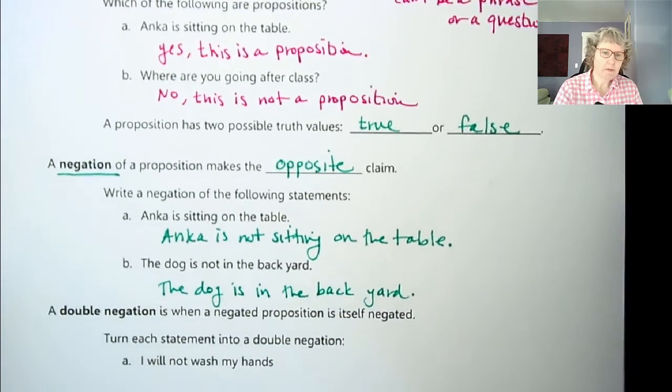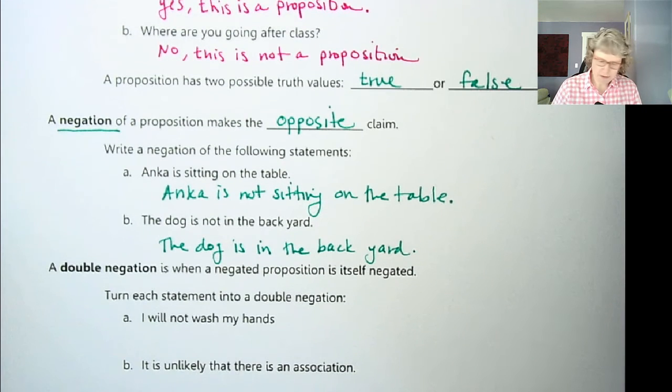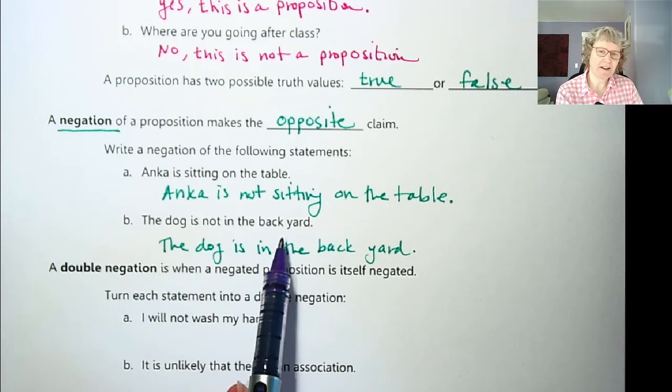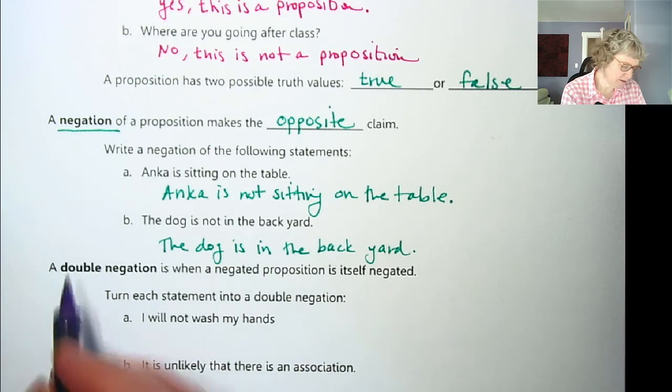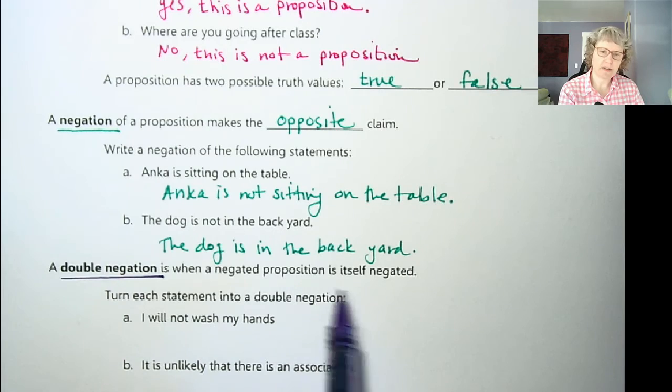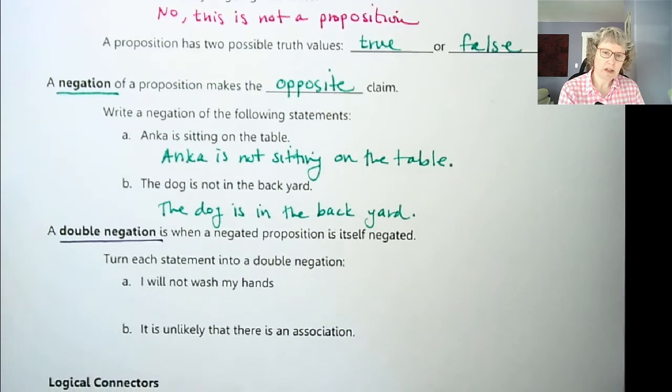And now you're also probably familiar with a double negative or double negation. For example, we could have said the dog is not not in the backyard, right? To switch the meaning to the dog is in the backyard. So a double negation has two negatives, or when a negated proposition is itself negated.